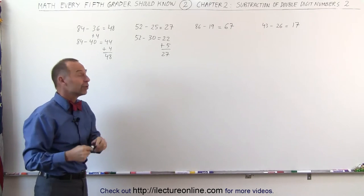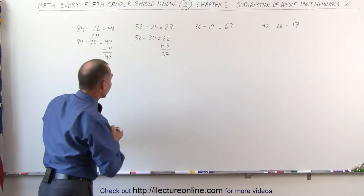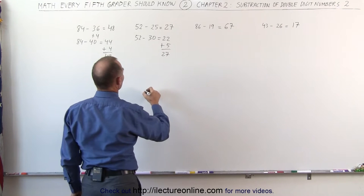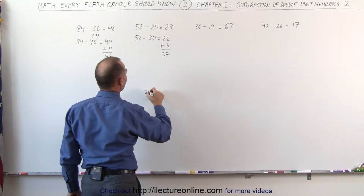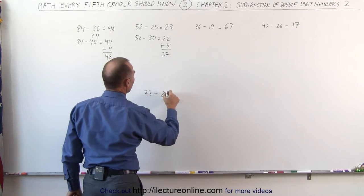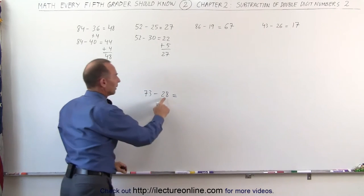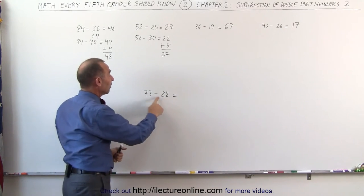So let's try one more and see if you can figure out how to do this. Let's take the number 73 minus 28. Let's turn that into 30, so I need to add two more to that. 73 minus 30 gives me 43,